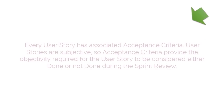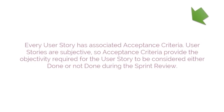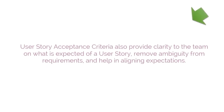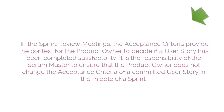Every user story has associated acceptance criteria. User stories are subjective, so acceptance criteria provide the objectivity required for the user story to be considered done or not done during the sprint review. User Story Acceptance Criteria also provide clarity to the team, remove ambiguity from requirements, and help align expectations. It is the responsibility of the Scrum Master to ensure that the product owner does not change the acceptance criteria of a committed user story in the middle of a sprint.